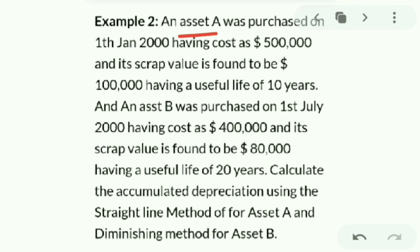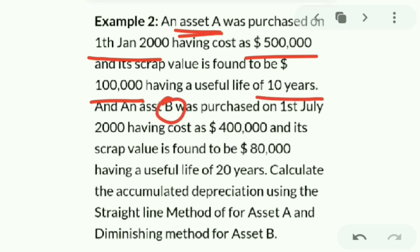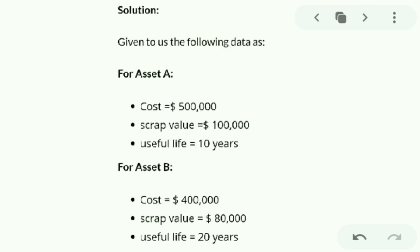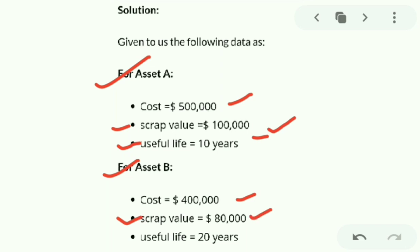Example 2: Asset A was purchased on 1st January 2000 at a cost of 5 lakh, scrap value 1 lakh, useful life 10 years. Asset B was purchased on 1st July 2000 at a cost of 4 lakh, scrap value 80,000, useful life 20 years. We need to calculate accumulated depreciation using SLM for Asset A and DMV for Asset B.